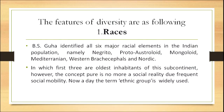The features of diversity are as follows. First, regarding races: B.S. Guha identified six major racial elements in the Indian population — namely Negrito, Proto-Australoid, Mongoloid, Mediterranean, Western Brachycephalous, and Nordic — of which the first three are the oldest inhabitants of the subcontinent. However, the concept of pure race is no longer a social reality due to frequent social mobility, and nowadays the term 'ethnic group' is widely used.